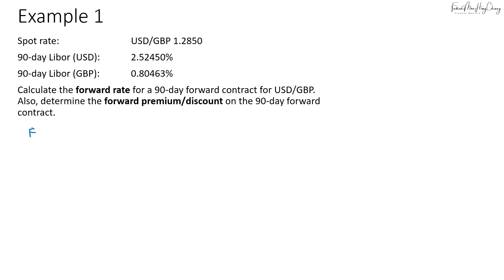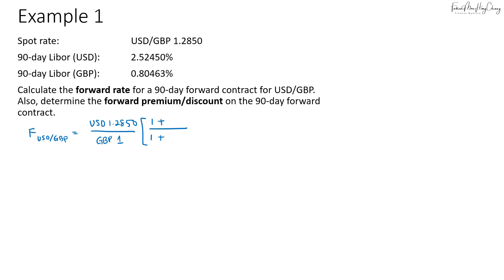To calculate the forward rate, the currency given is dollar over pound. This is based on the spot rate, so that's USD 1.2850 over 1 pound. Then we multiply by 1 plus the interest rates on both sides. To determine which interest rate to use, always remember to use the interest rate based on the currency in the numerator or denominator.